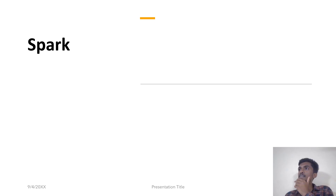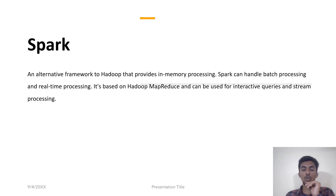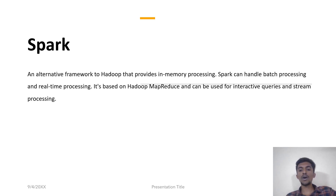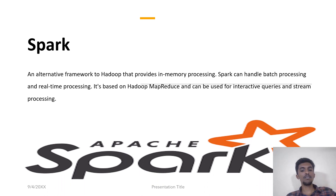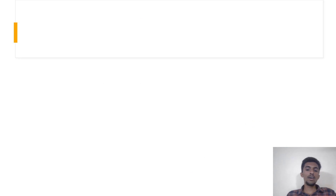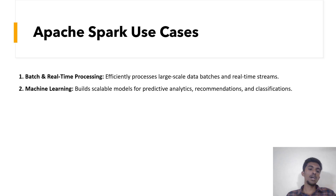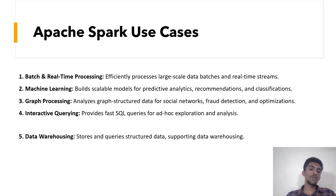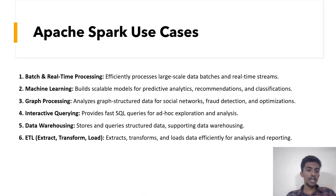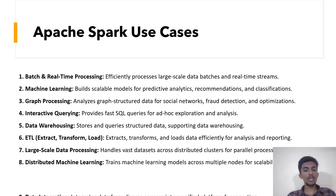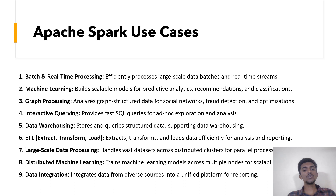Apache Spark is an alternative framework that provides in-memory processing. Spark can handle both batch processing and real-time processing. It's based on Hadoop MapReduce and can be used for interactive queries and stream processing. The use cases of Apache Spark include: batch and real-time processing, machine learning, graph processing, interactive querying, data warehousing, ETL, large-scale data processing, distributed machine learning, and data integration.